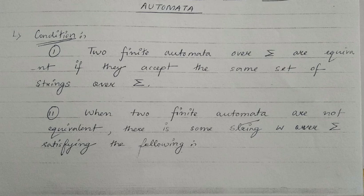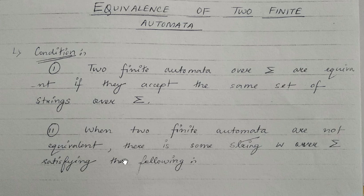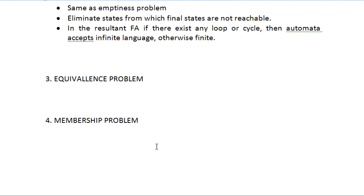So if you find a pair of states where you get a final and non-final combination on the same input, the two finite automata are not equivalent. To summarize: condition one — both automata accept the same set of strings; condition two — if on any input symbol one automaton reaches a final state and the other reaches a non-final state, they are not equivalent. I suggest referring to the lecture on equivalence of two finite automata for worked examples.